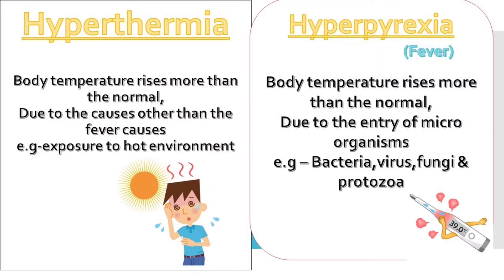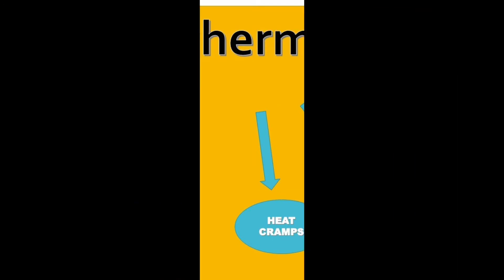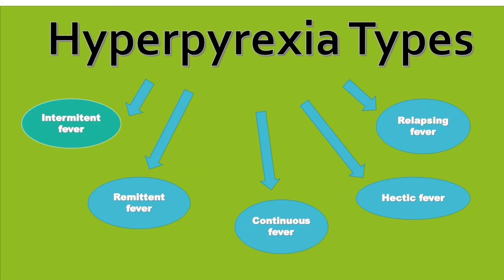Let us move to the types of hyperthermia. There are five types: the first one is heat tetani, the second one is heat rash, the third one is heat cramps, the fourth one is heat exhaustion, and the fifth one is heat stroke. Hyperpyrexia also has five types: the first is intermittent fever, second is remittent fever, third is continuous fever, fourth is hectic fever, and the fifth is relapsing fever.